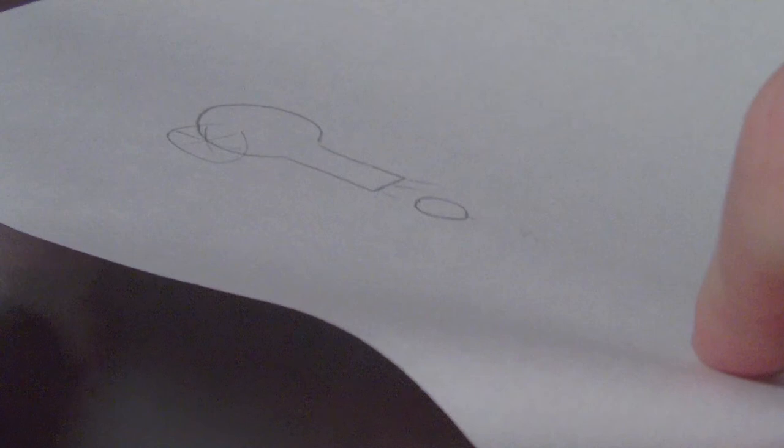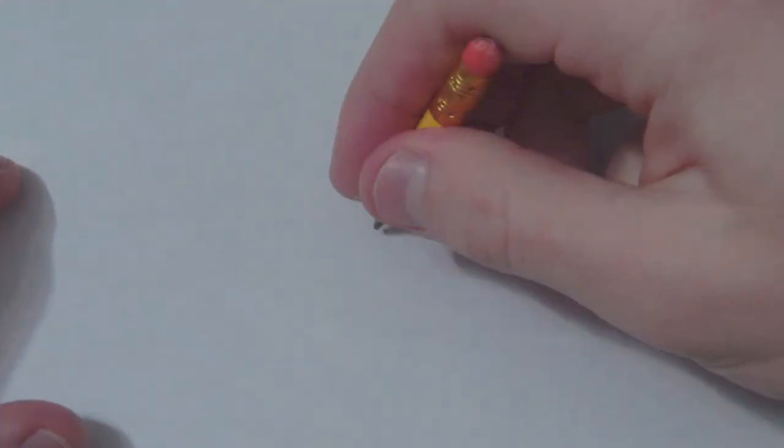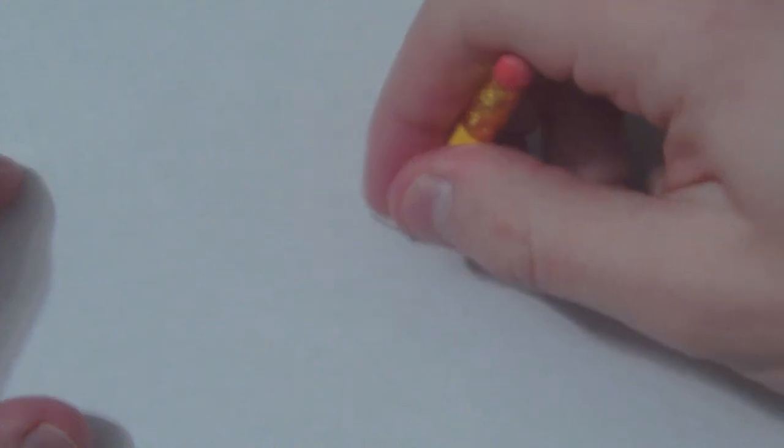Anyway, so we're going to kind of tilt this sort of like that. Yeah. You see that shape right there? I'm going to try and mimic that a little bit by just kind of pulling this line down.